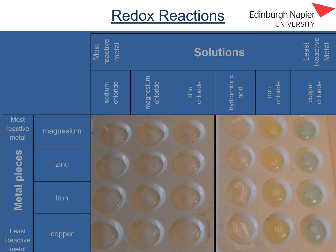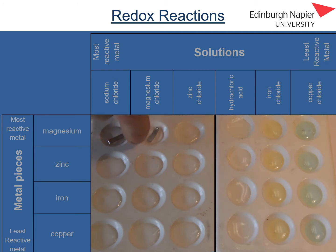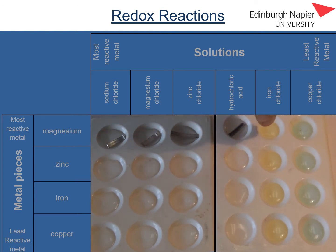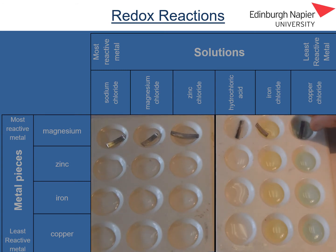To each of these solutions I'm going to add some metal. Along the top row I'm going to add a piece of magnesium metal to each of the solutions, looking to see if we can observe any reaction taking place. So I'm adding magnesium to the sodium chloride, magnesium chloride, zinc chloride, hydrochloric acid, iron chloride, and copper chloride solutions.